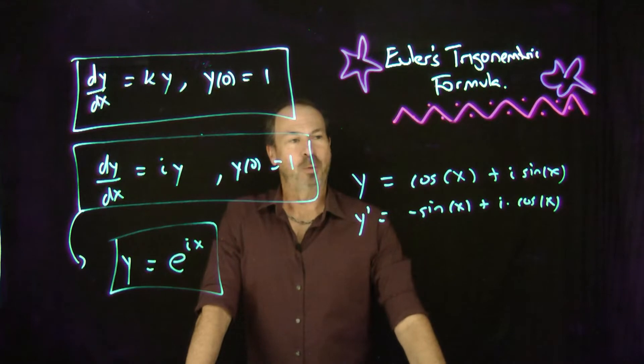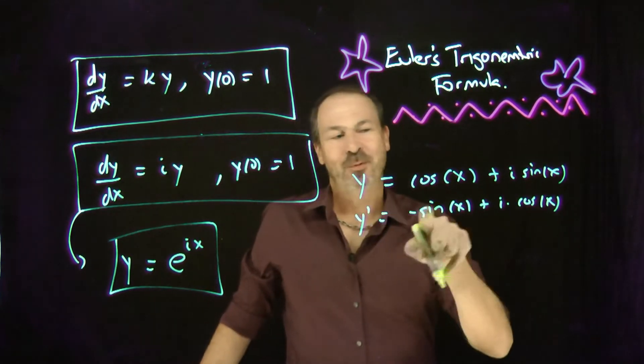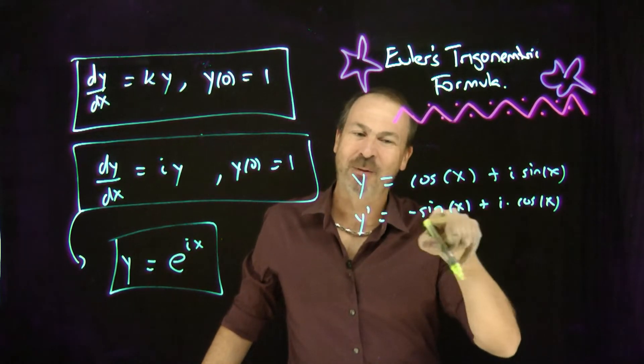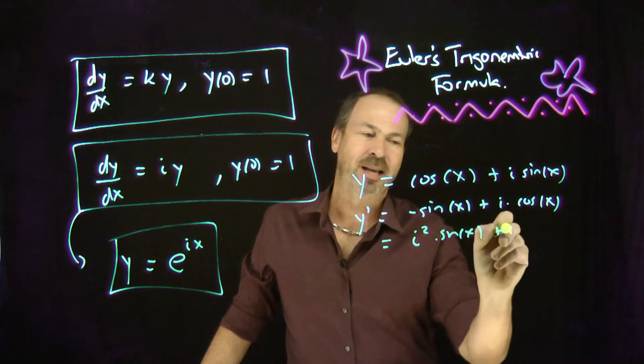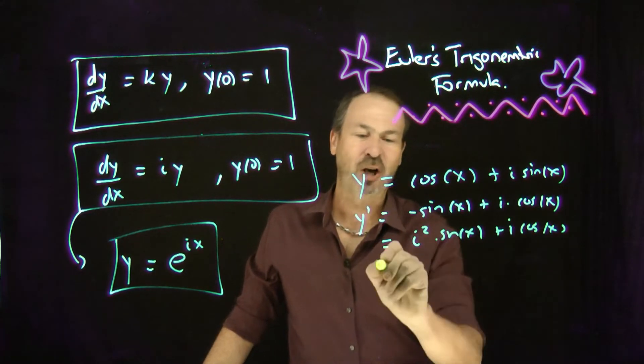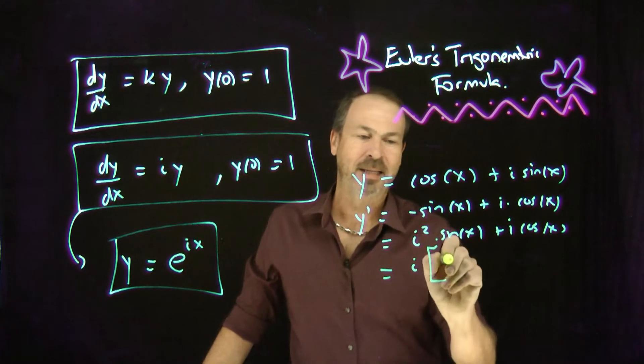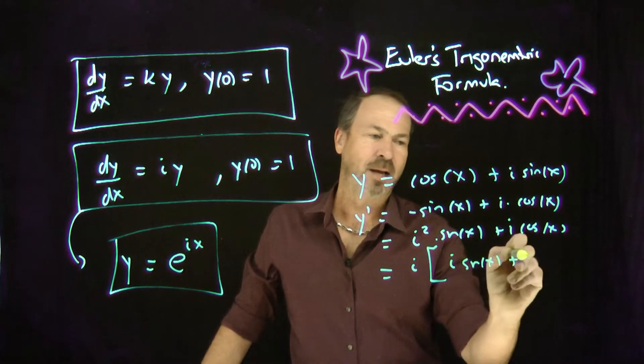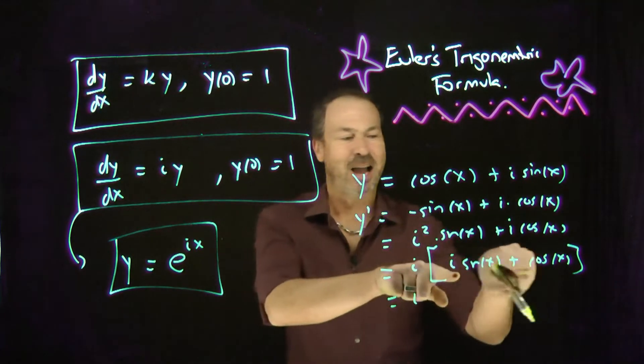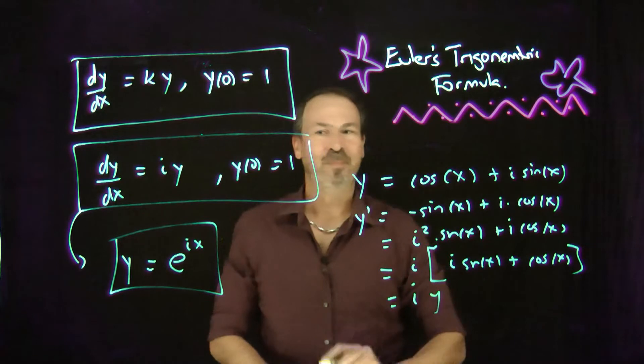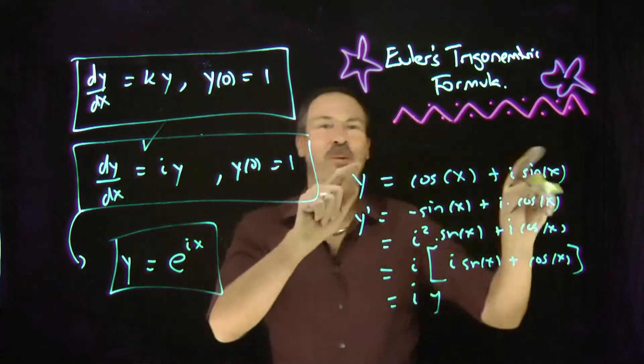What do I do now? Well, that negative 1 - remember i is that special number that i squared equals negative 1. So that negative 1 is really i squared times sine of x, plus i times cos of x. So actually, we've got a common factor of i. Let me pull it out. It's i times sine of x plus cos of x. So actually, this is i times the original function. Bingo. It works.